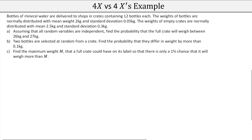Bottles of mineral water are delivered to shops in crates containing 12 bottles each. Bottle weights are normally distributed with mean 2 kg and standard deviation 0.05 kg. Empty crate weights are normally distributed with mean 2.5 kg and standard deviation 0.3 kg. In Part A, assuming all random variables are independent, we need to find the probability that a full crate weighs between 26 kg and 27 kg.